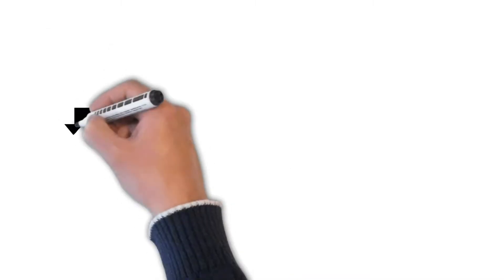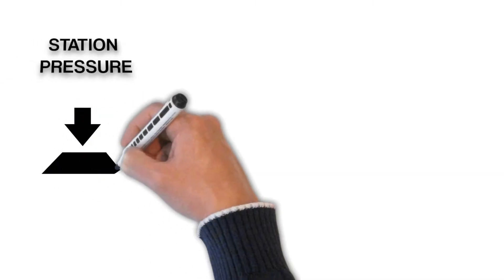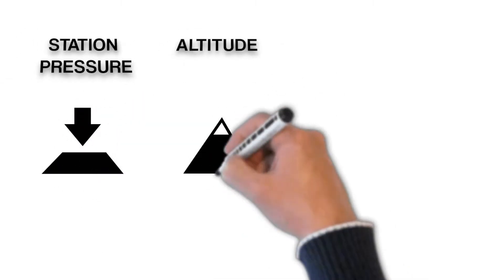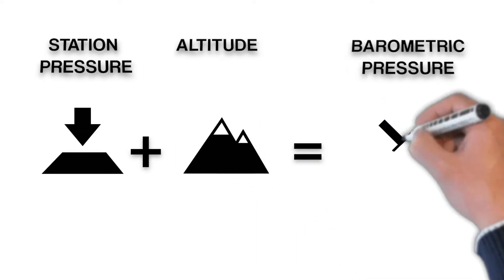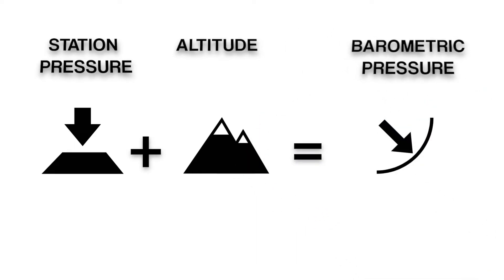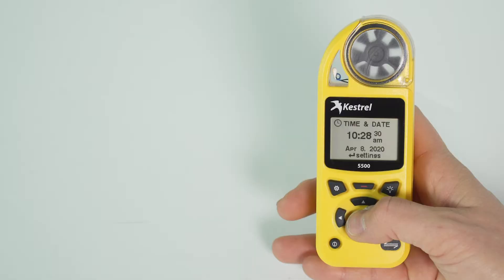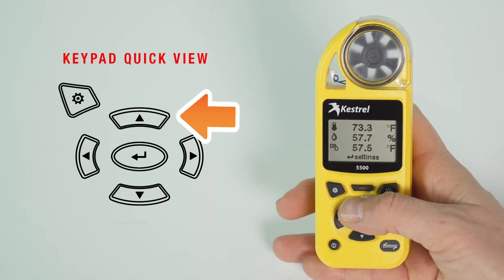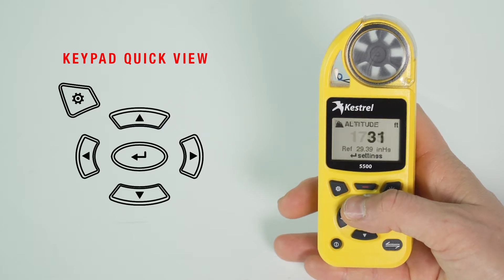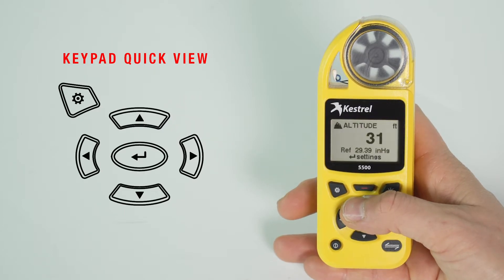The Kestrel needs to know your current altitude so that it can use its station pressure reading and this reference value for your altitude to do the math and provide you with a current barometric pressure reading. After turning on your Kestrel, scroll up through the different measurement screens until you reach the altitude or barometric pressure screen. If you know your current local barometric pressure, you can start with setting this reference value in the altitude measurement screen.